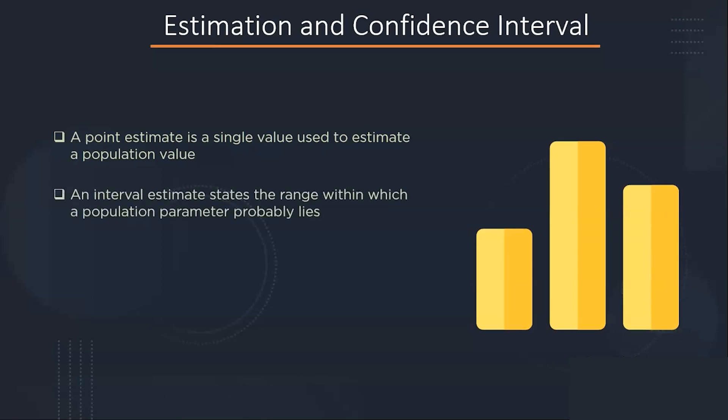An interval estimate gives you a range of values where the parameter is expected to lie. A confidence interval is the most common type of interval estimate. Both types of estimate are important for gathering a clear idea of where a parameter is likely to lie.